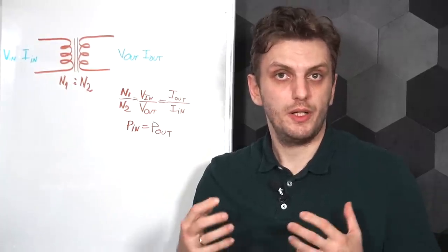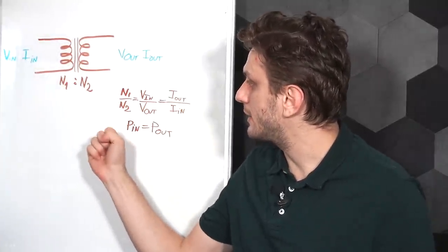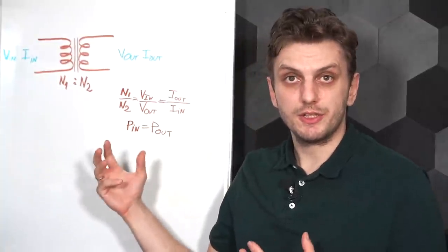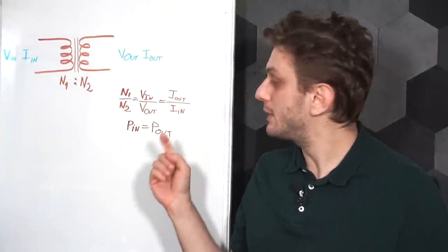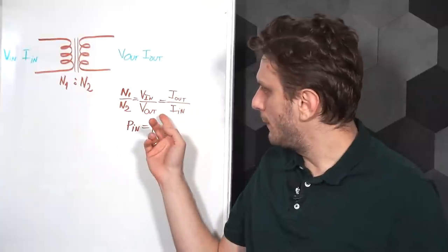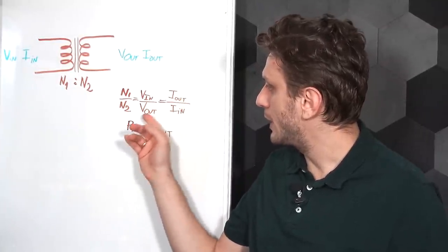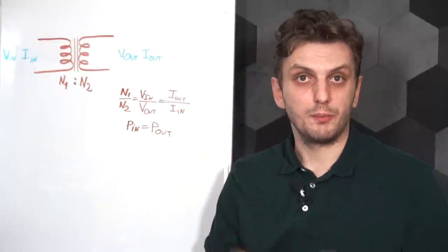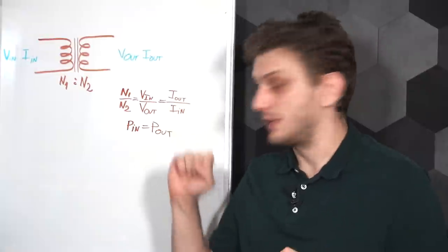This is where it gets tricky, because we need to look at how the transformer works in more detail. When talking about transformers, common analysis tells you the turns ratio between primary and secondary equals the voltage ratio — input voltage to output voltage — and it equals the inverse of the currents, so output current divided by input current. This last bit is what a current transformer relies upon. If both are true, then the product of terms is also true: input voltage times input current equals output voltage times output current, so input power equals output power.